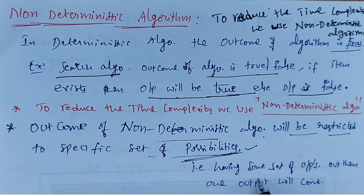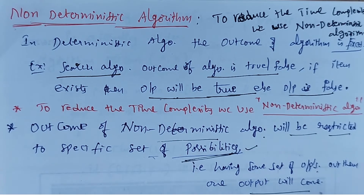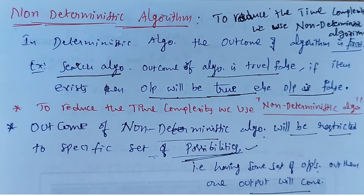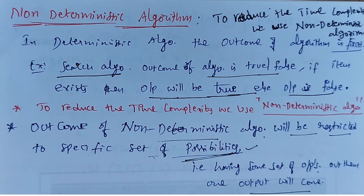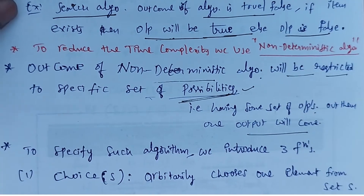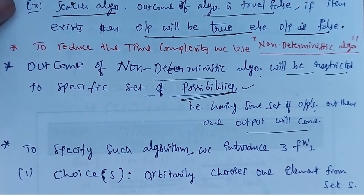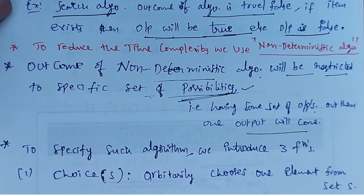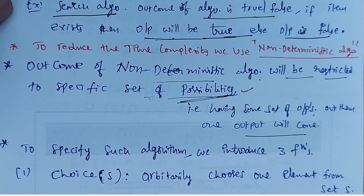That means there is a predefined set of results — having some set of outputs, and out of them any one output will be displayed. To specify such algorithms, we introduce three functions.